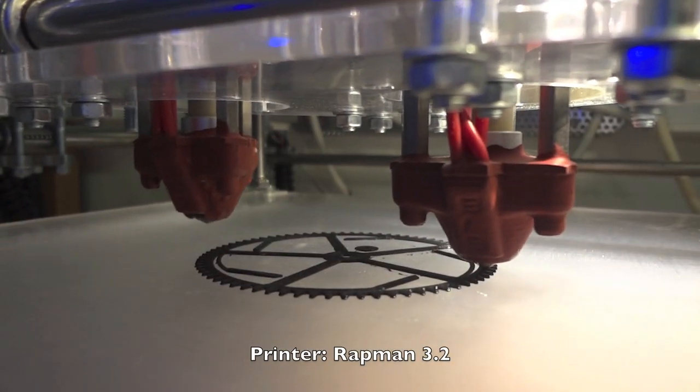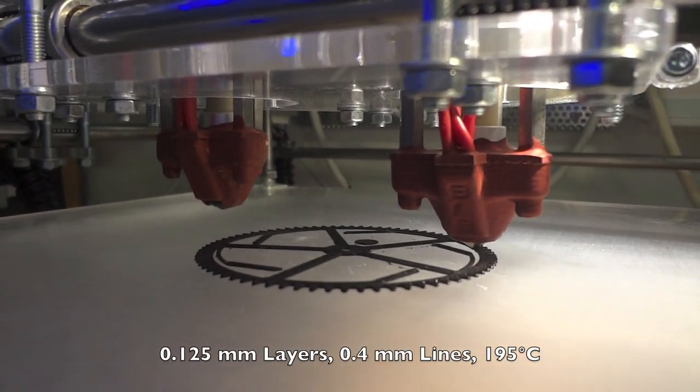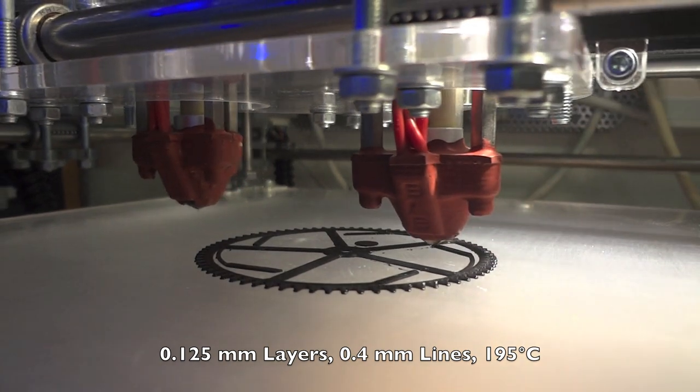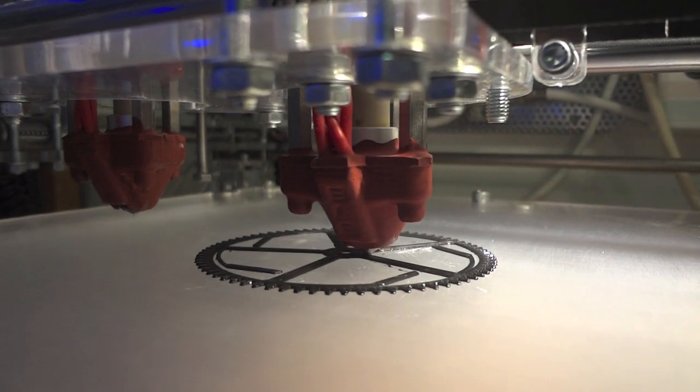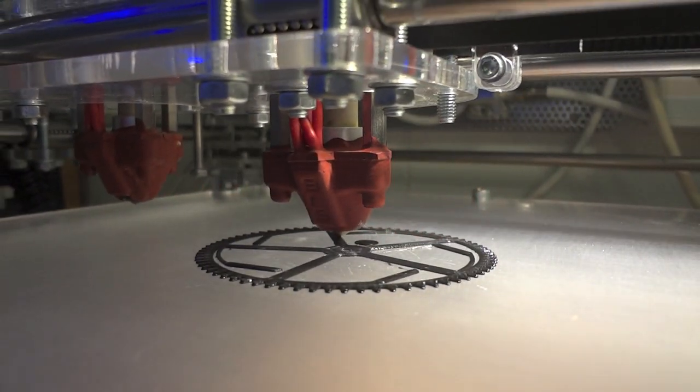The lines are then transferred to the 3D printer which prints very thin layers of approximately a tenth of a millimeter on top of each other. The PLA is heated up to approximately 200 degrees Celsius and the layers stick together.